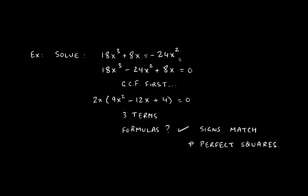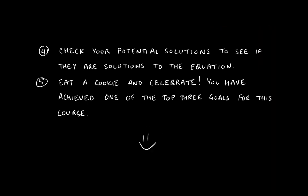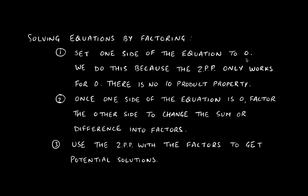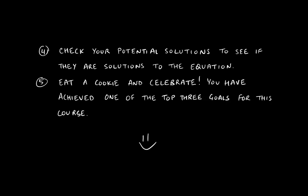Every equation in this section follows the same pattern. Step 1: set one side equal to zero, so you can use the zero product property after factoring. Step 2: factor the other side. Step 3: once you have factors on one side and zero on the other, apply the zero product property. Step 4: check your potential solutions in the original equation. You will need extreme comfort with all factoring techniques, as everything covered so far comes together in this section. If you have any questions, please feel free to reach out.